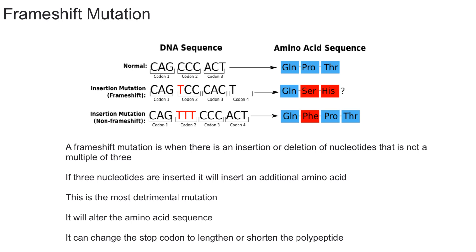Now it's time to talk about the frameshift mutation. The definition of a frameshift mutation is when there's an insertion or deletion of nucleotides that is not a multiple of three. As you can see here, CAG CCC ACT is your normal DNA sequence.